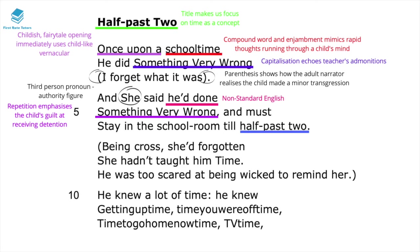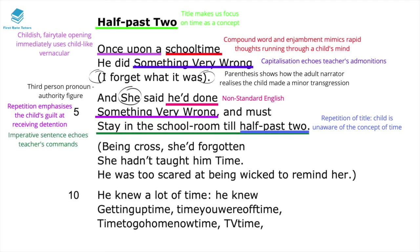The title is echoed again at the end of line six — 'half past two' — showing the child is vaguely aware of the concept of time but not entirely so. They don't know when half past two will come; they just know the teacher said to stay until then. The imperative sentence 'stay in the school room till half past two' echoes the teacher's commands.